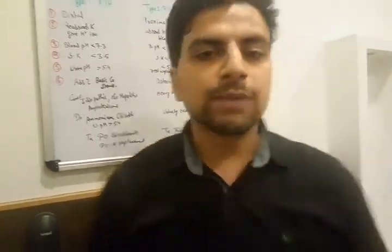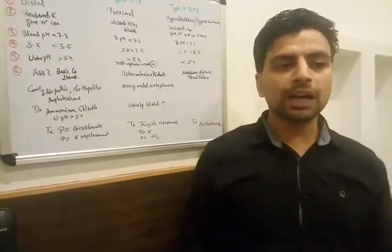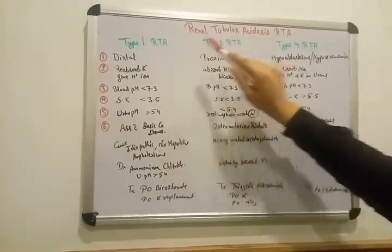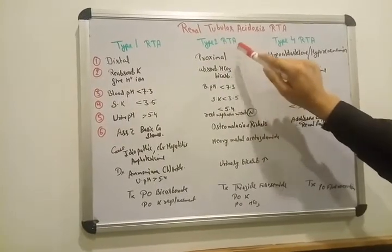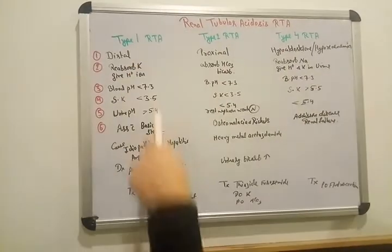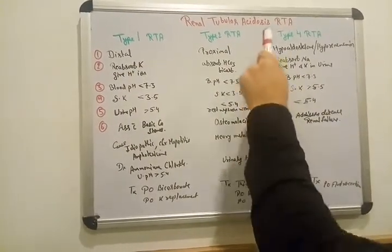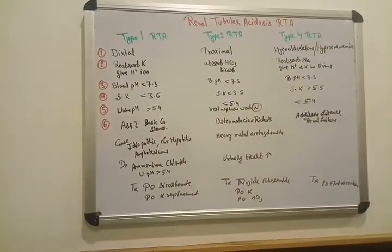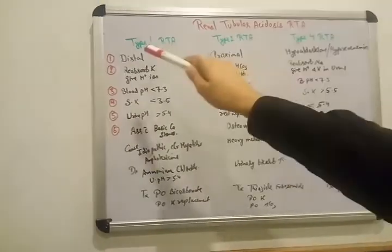Good evening doctors, myself Dr. Himan Sharma and our today's topic is renal tubular acidosis. I am going to explain you about type 1 renal tubular acidosis RTA, type 2, type 4 renal tubular acidosis. So one by one I am going to explain everything. Type 3 also existing but that is mixed type. No need to understand about that. So come closer.